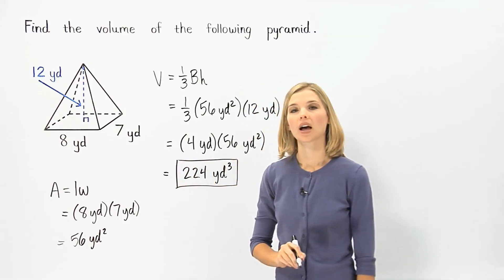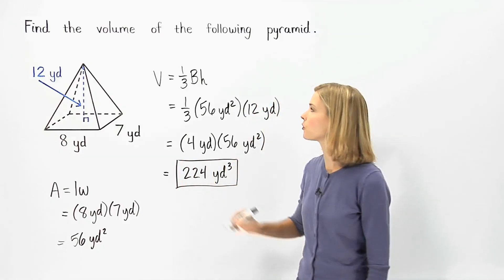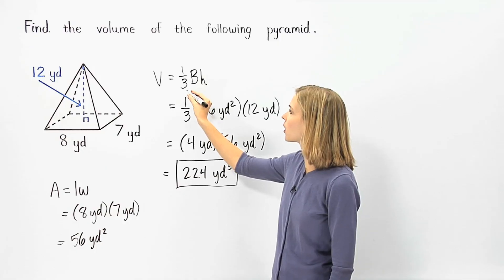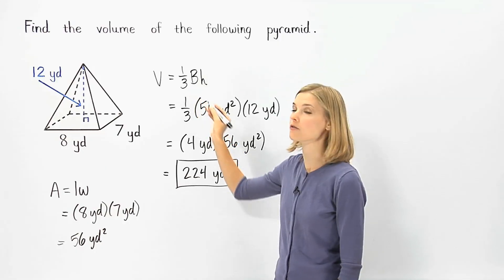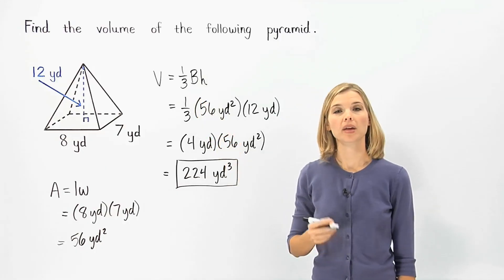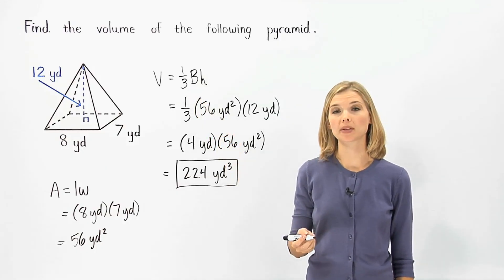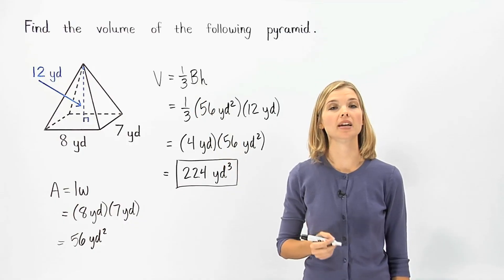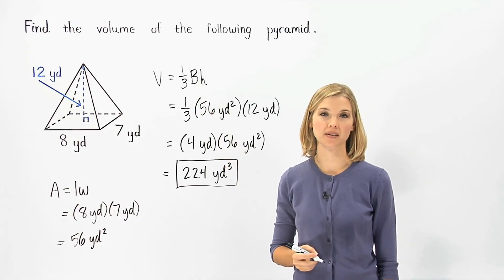A common mistake in this problem is to forget the one-third in the formula for volume of a pyramid. Be aware of this common mistake so you can make sure to avoid it.